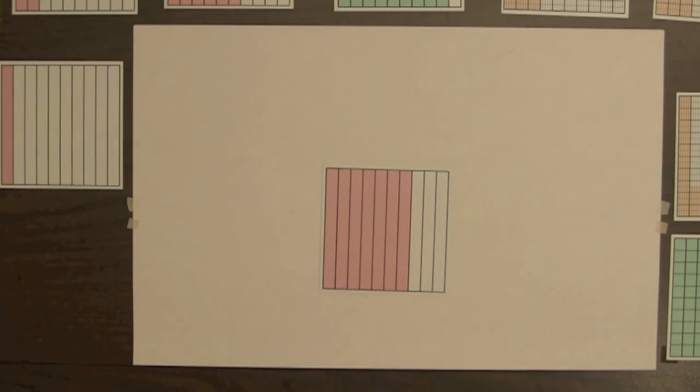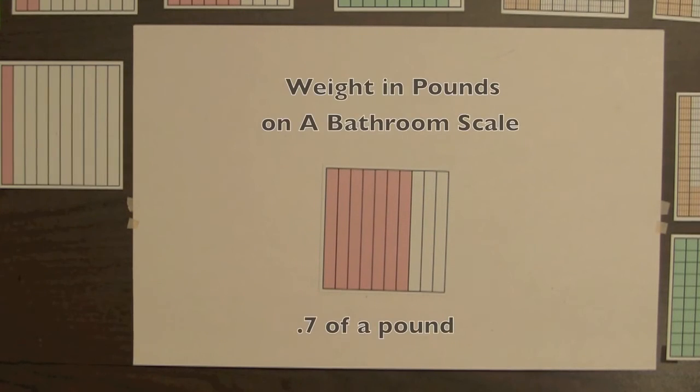For older students who have seen tenths of a pound on bathroom scales, if one whole square represents one pound, then this square represents seven tenths of a pound.